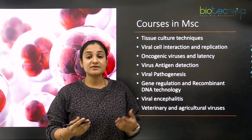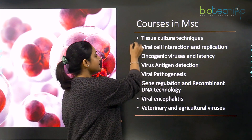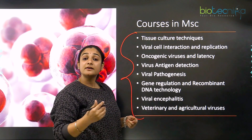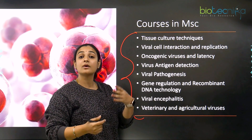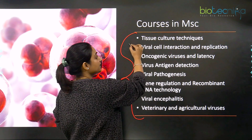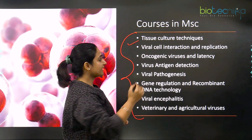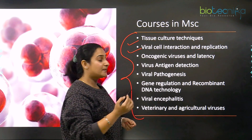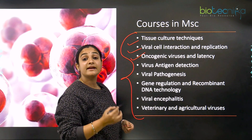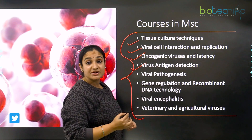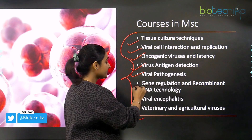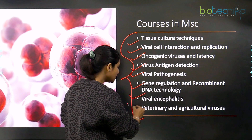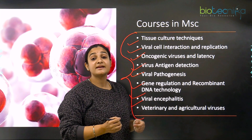When you go for MSc after your BSc, these are the major courses you will study. Through these courses you will learn a lot of technical skills helpful when employed in any sector. The first course covers tissue culture techniques, virology cell replication, viral cell interaction and its replication, oncogenic viruses and their latency, virus antigen detection, viral pathogenesis, gene regulation and recombinant DNA technology, viral encephalitis, and veterinary and agricultural viruses.